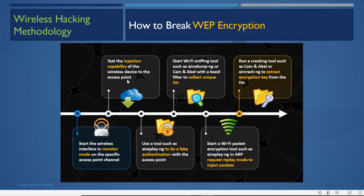After testing injection capability, the attacker uses a tool such as aireplay-ng to perform fake authentication with the access point. Then the attacker starts a Wi-Fi sniffing tool such as airodump-ng with a BSSID filter to collect unique IVs. WEP encryption has a weakness of weak IVs — the attacker must collect enough IVs to break the WEP encryption.